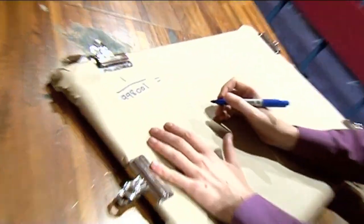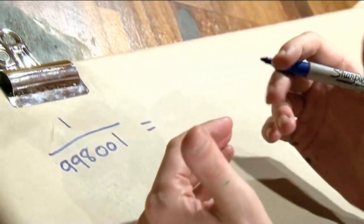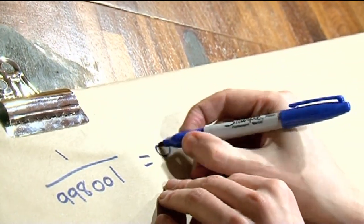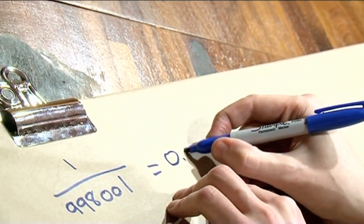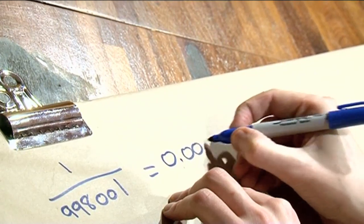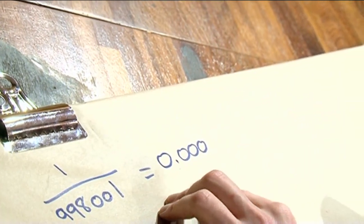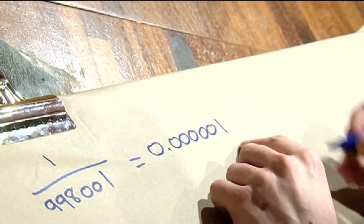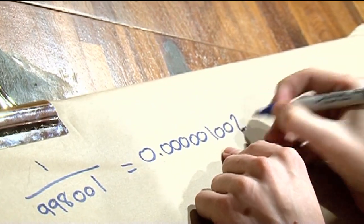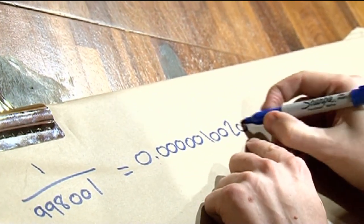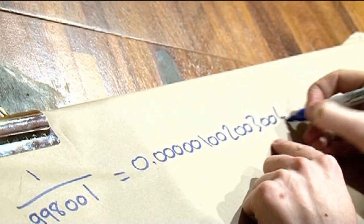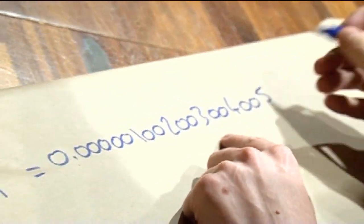If you do the decimal for it, you get something rather remarkable. You get every single three-digit number. So it starts with 0.000, 001, 002, 003, 004, 005 — and it gives you every single three-digit number.